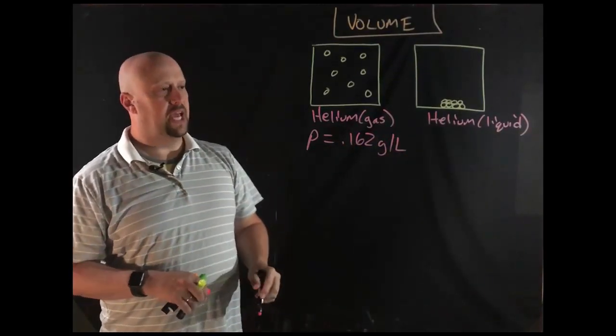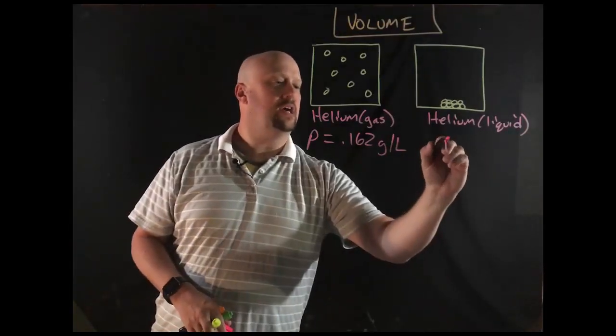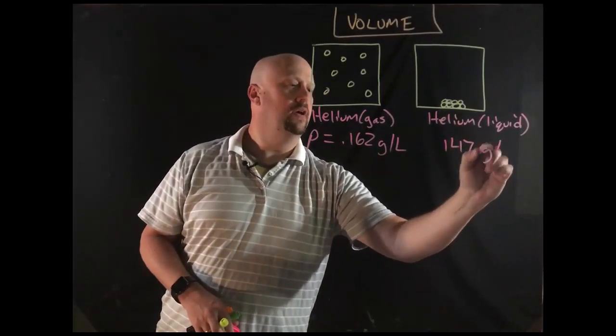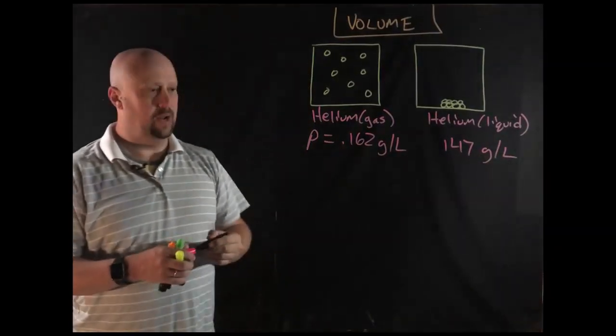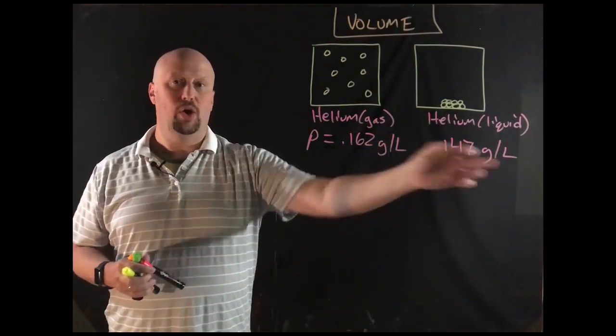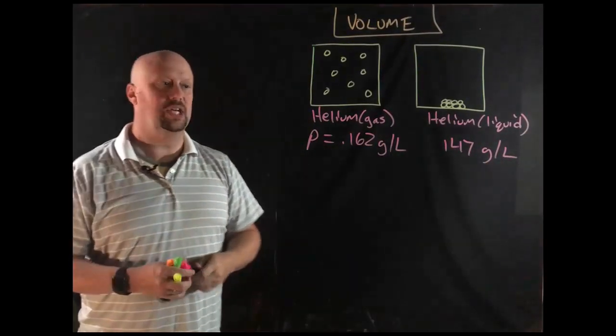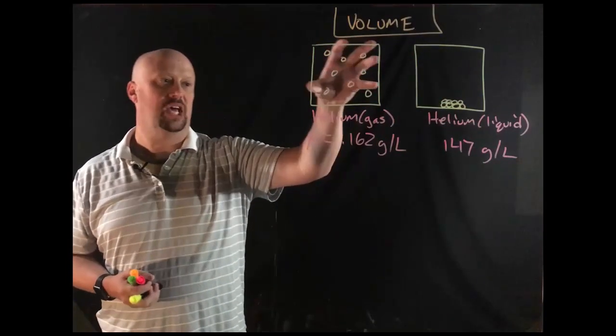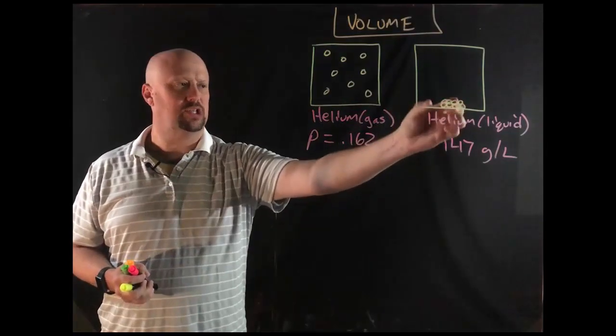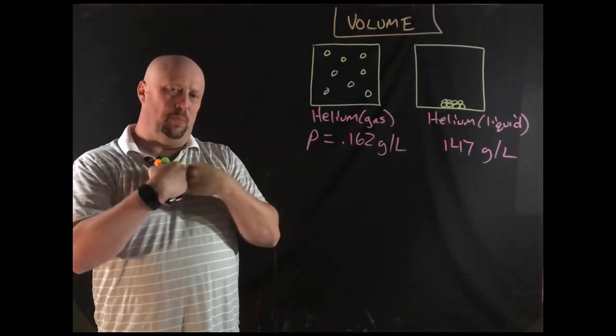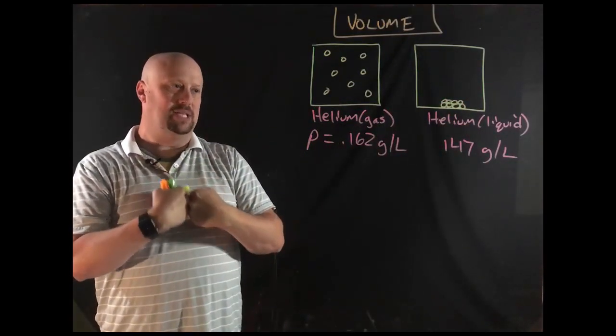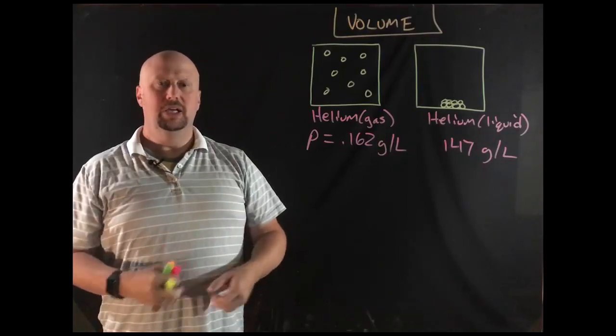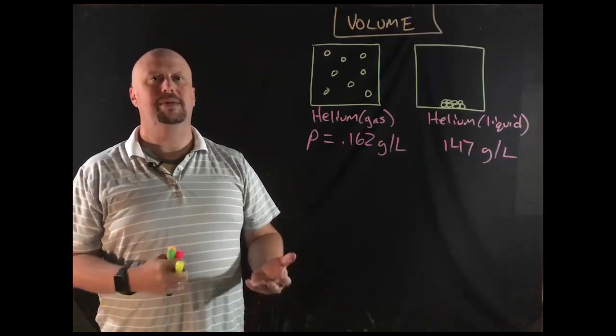And in the case of the liquid helium, its density is 147 grams per liter. Okay, now what does that mean? Well, that means that it's three orders of magnitude essentially larger than the gas phase. In other words, it's a thousand times more constricted down in space. The particles are packed together a thousand times more tightly. Okay, so those are the two parts of density that matter to us.